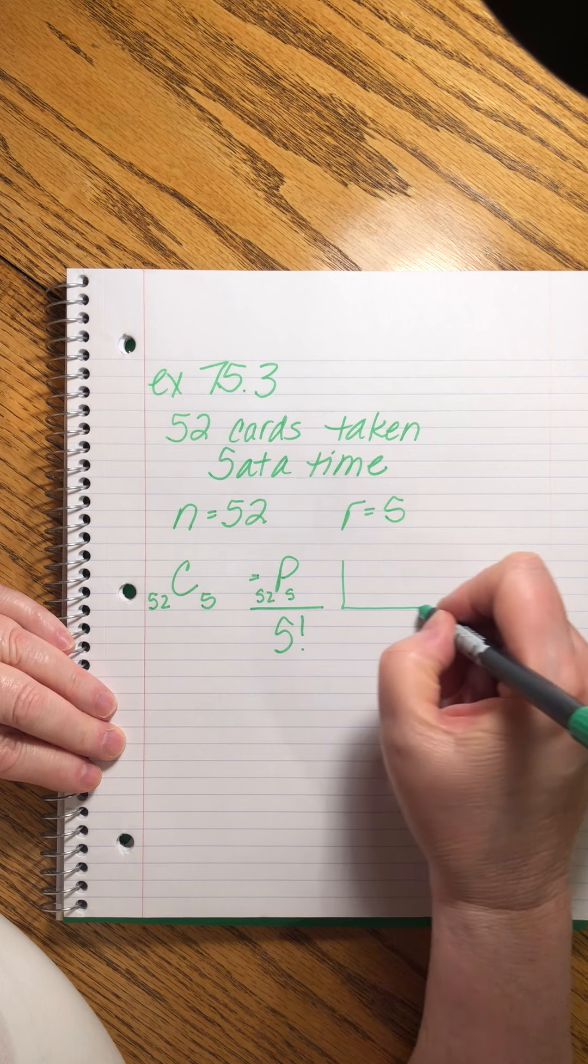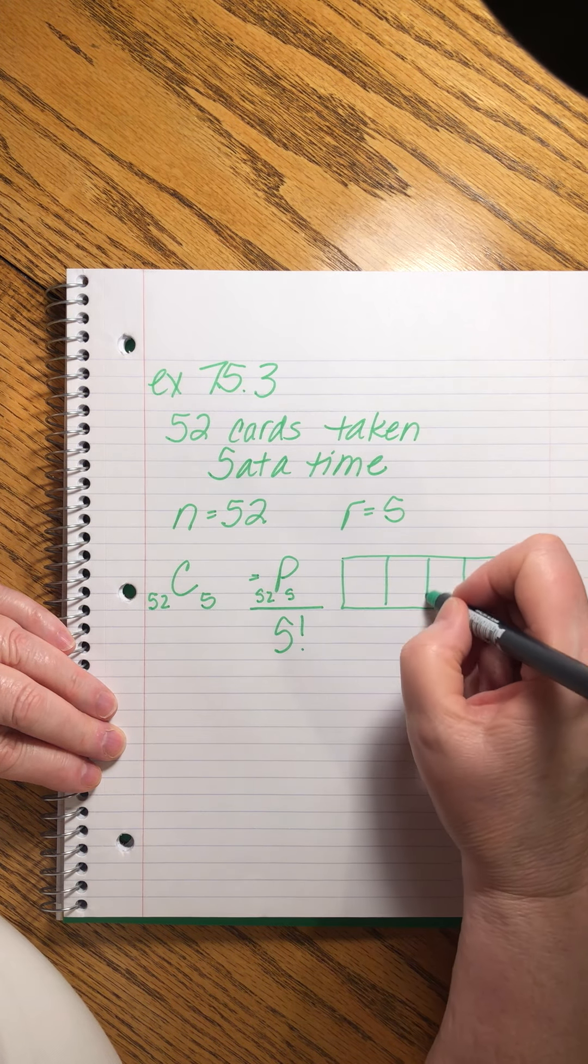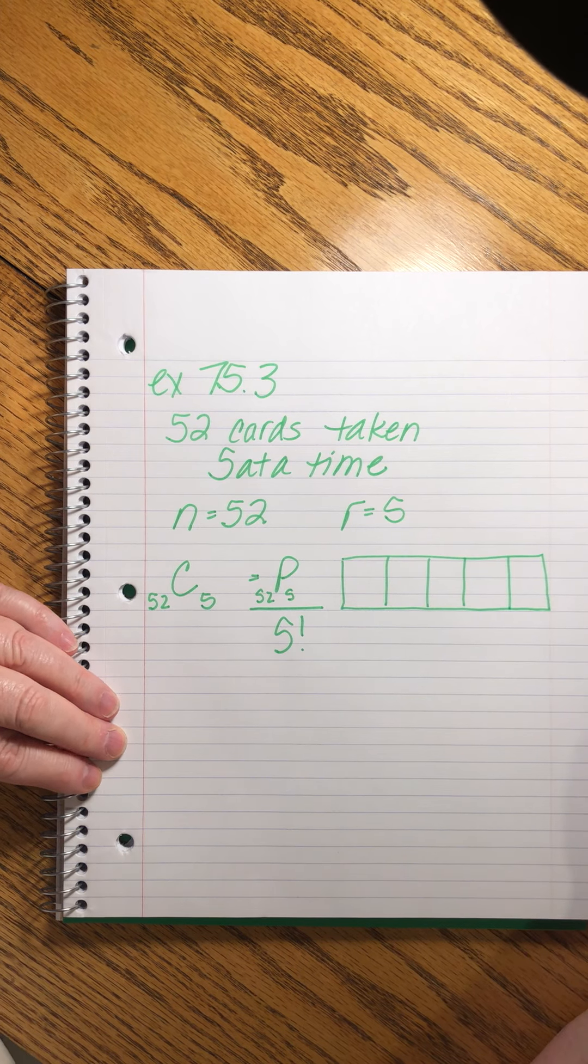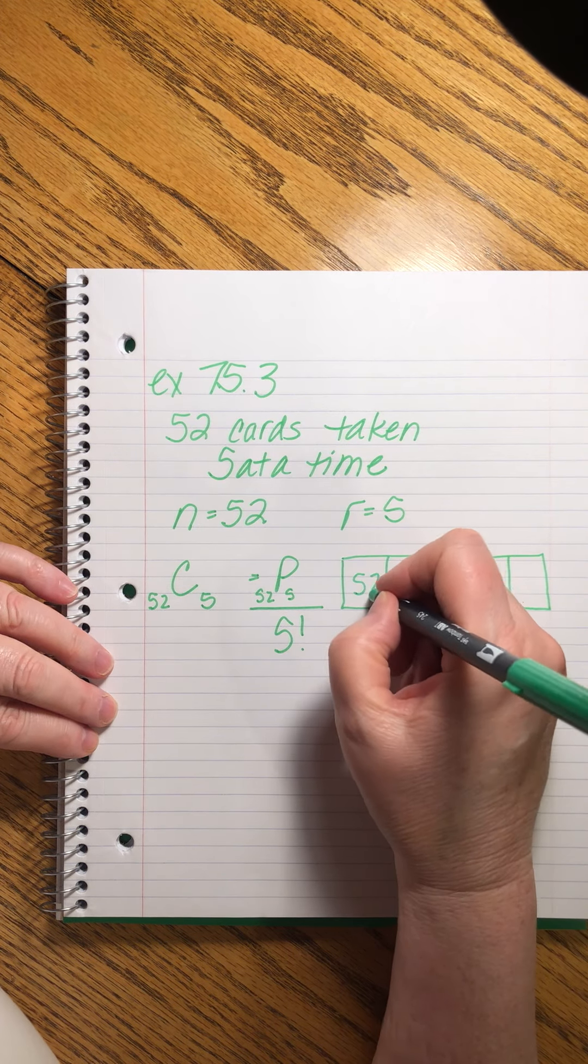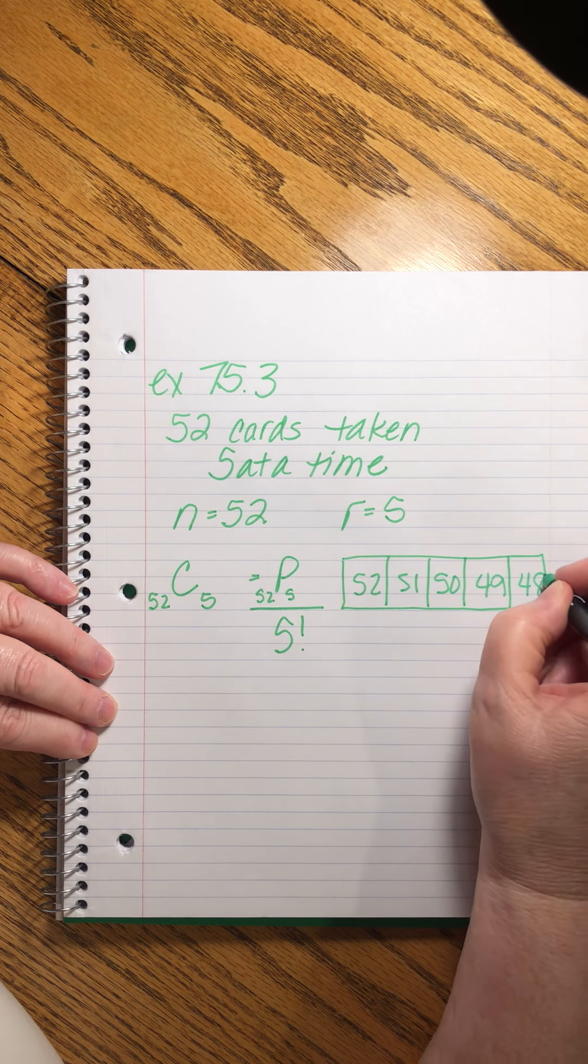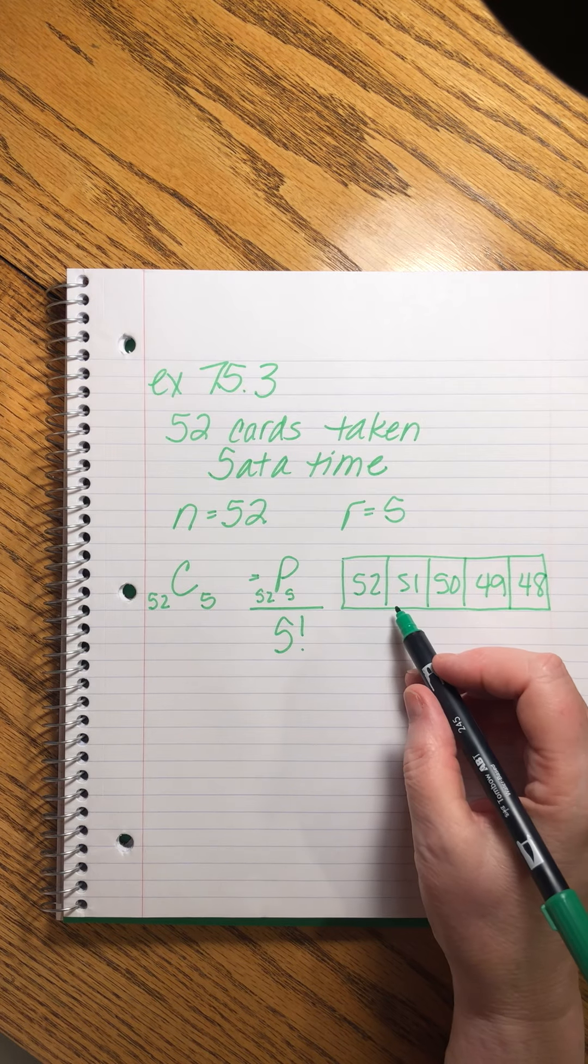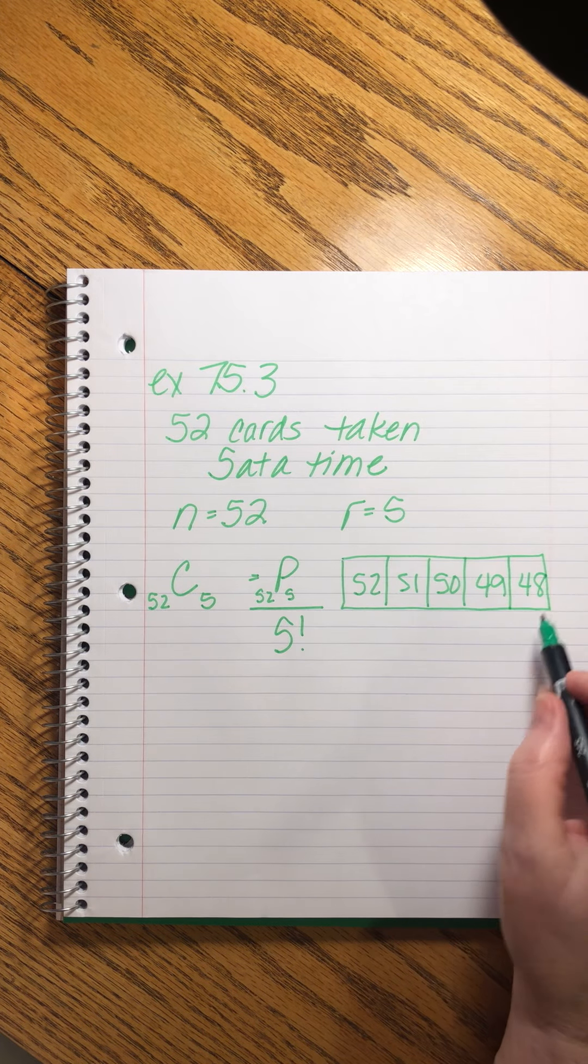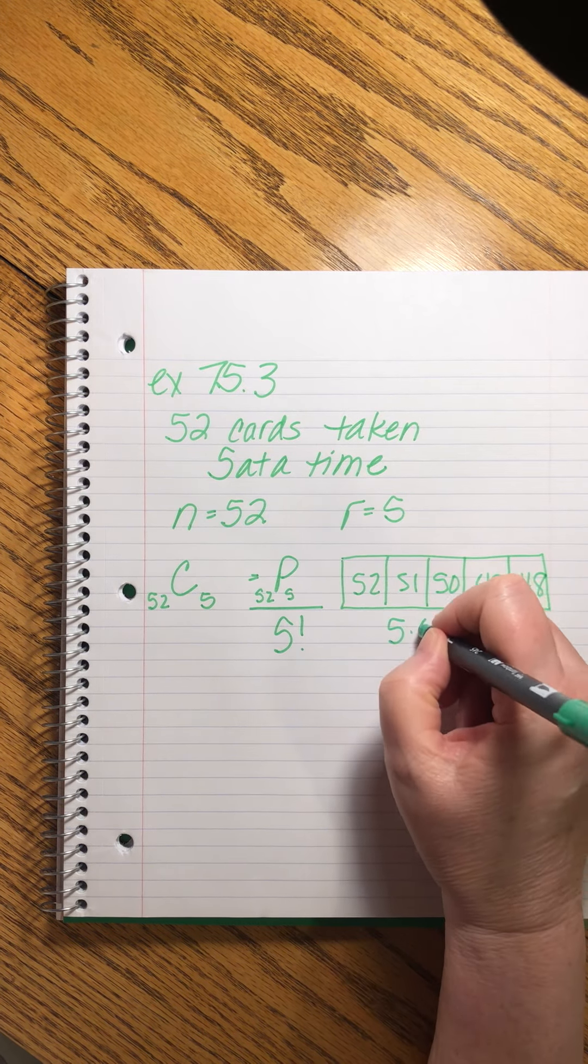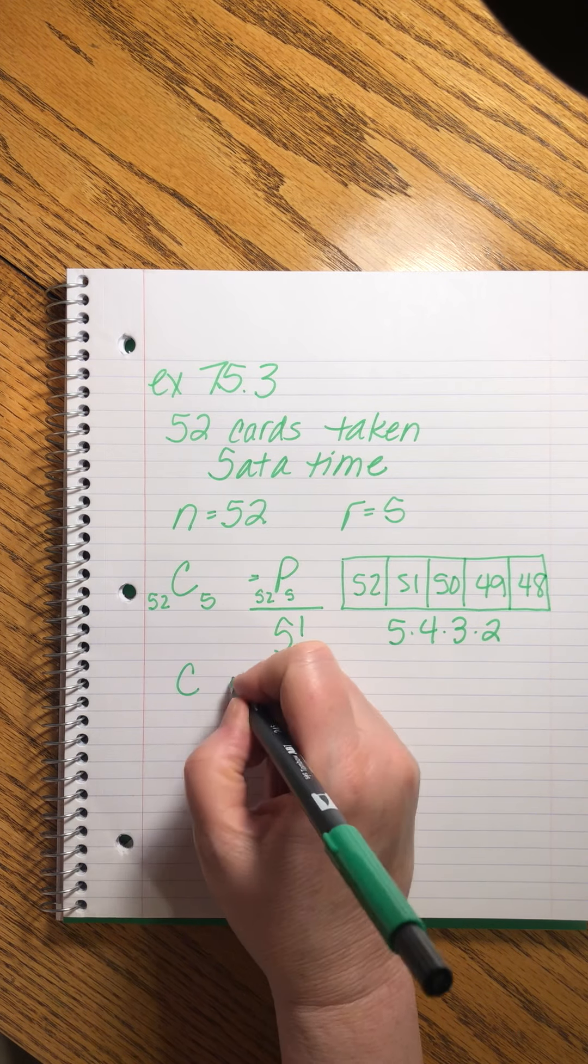The combination of 52 items taken five at a time equals the permutation of that same set of numbers divided by five factorial. Let's draw out what the permutation looks like. One, two, three, four, five. There's the five cards. 52, 51, 50, 49, 48. And this is going to be a really big number. We're going to divide it by 5 times 4 times 3 times 2. So we would use a calculator to simplify that. That's ridiculous.